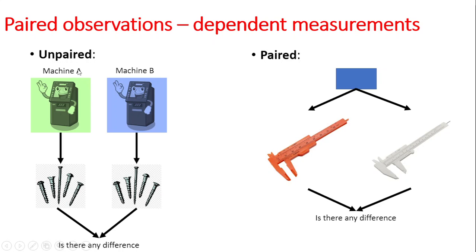You can call this an unpaired event. On the other hand, an example of a paired event: if you have one part and you use two different gauges to measure it, you are interested in whether there is any difference between the measurements taken by the two gauges from the same part. Since you are measuring the same part, these events are related.